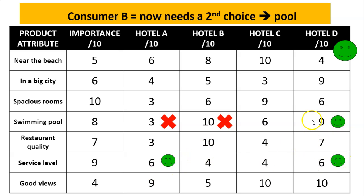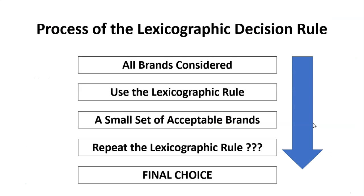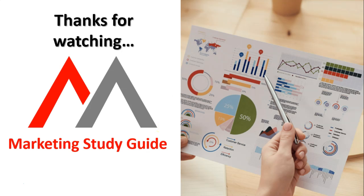Hotel D tied equal first on service and came first on the swimming pool as the second tiebreaker. So, pretty simply, we should have a clear outcome from the lexicographic rule. We consider all brands, use the rule to pick our most important attribute, and usually we have one outcome — or as in this case, we had two hotels left and simply repeated the process working down our list of important attributes until we had a final choice. Thanks for watching, and remember there are other videos covering all the decision rules in consumer behavior.